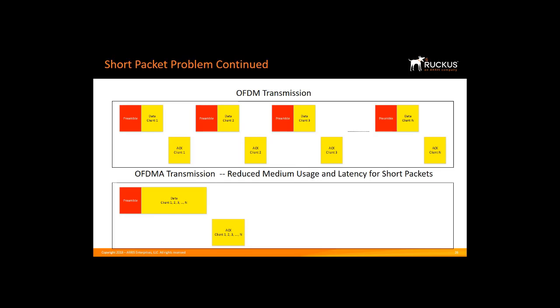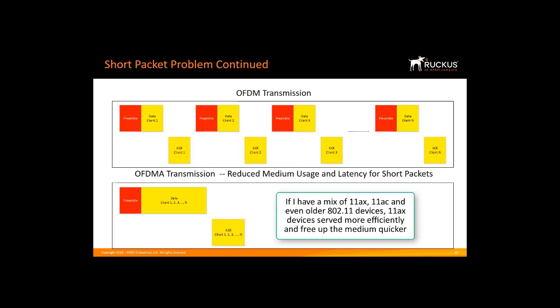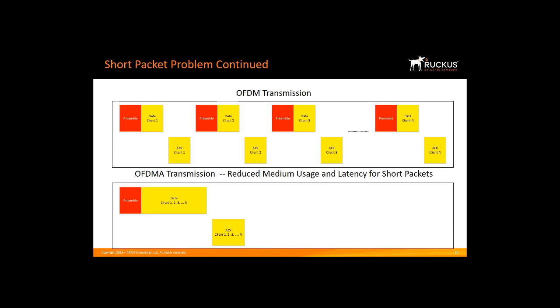By using the OFDMA method, a lot of air time is freed up, so more bandwidth is available to serve other users. If there is a mix of 11ax, 11ac, and even older 802.11 devices — which is how the world will look for quite a few years — then the 11ax devices are served more efficiently and the medium is freed up quicker to then serve the 11ac devices. This allows more data throughput to serve the legacy clients.